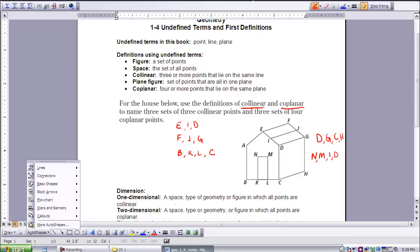As you can see here, I've written down some points that all are contained in the same plane. They are coplanar. Here is one side of the house. D, G, C, H. They're all in the same plane. Therefore, they are coplanar.